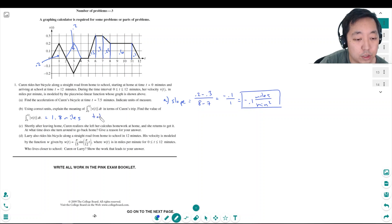Which is the total distance traveled by Karen in 12 minutes. Shortly after leaving home, Karen realizes she left her calculus homework at home and she returns to get it. At what time does she turn around to go back home? Give a reason for an answer.